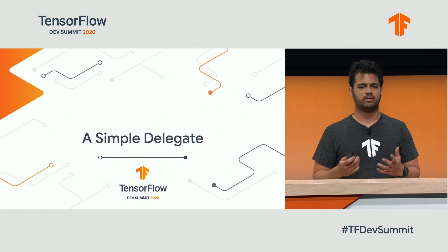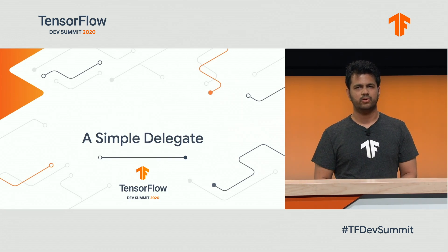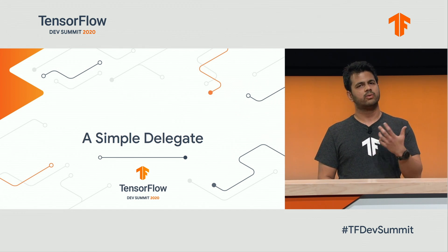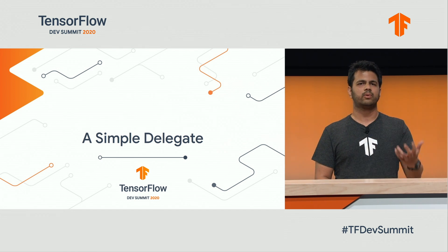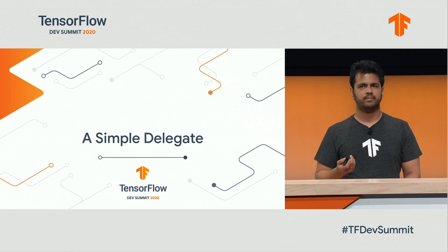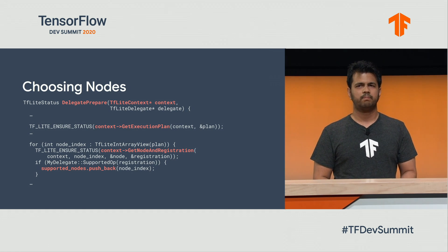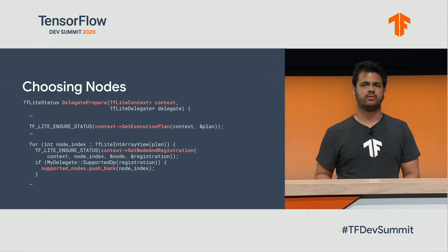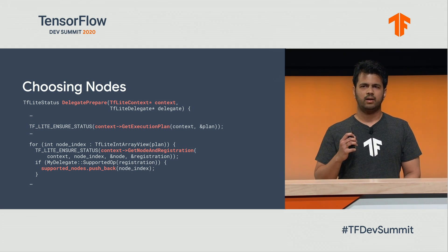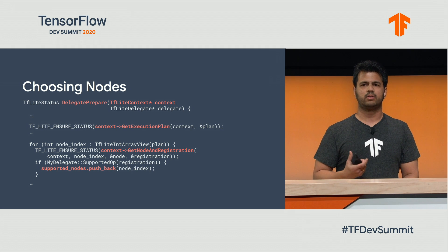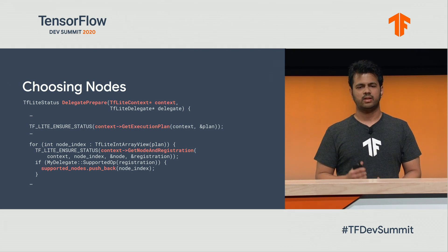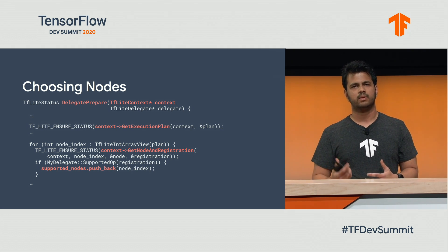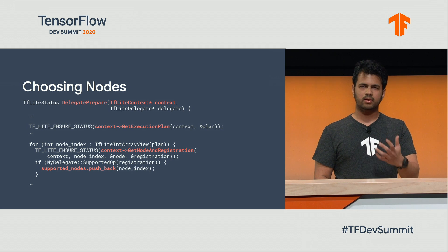Now, suppose you have your own secret accelerator, and you want to use our delegate API to write your own delegate. Let's see how it would work in code. So the bulk of how the interpreter delegates nodes is in this function that we like to call delegate prepare. This function gets a context, an object called the TFLite context, which is essentially an interface into the TensorFlow Lite runtime for the delegate. Using the context, the delegate first gets the execution plan,